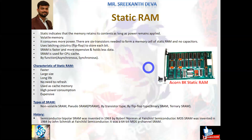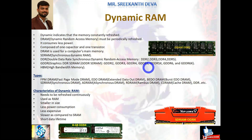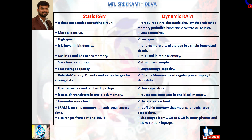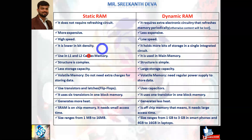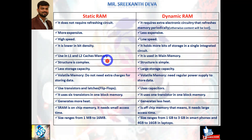Dynamic RAM must be periodically refreshed. Differences between SRAM and DRAM: SRAM does not require any refreshing circuit, but DRAM must be refreshed or content will be lost. SRAM is more expensive because it contains six transistors; DRAM is less expensive. SRAM is higher speed; DRAM is lower speed. SRAM has lower bit density; DRAM has more bits of storage in a single integrated circuit. SRAM internally uses L1, L2 cache memory, while DRAM is used in main memory.